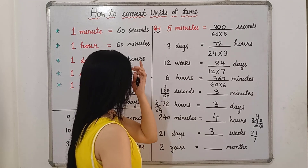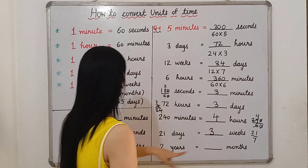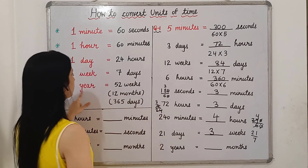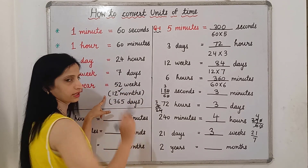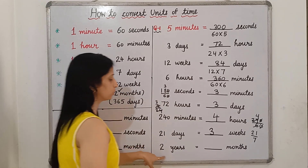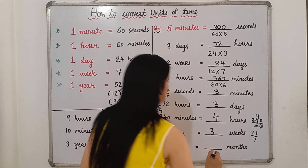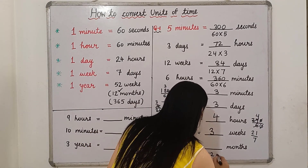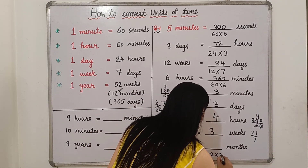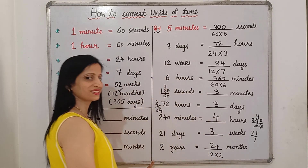2 years is equal to how many months? In 1 year there are 12 months, so in 2 years it will be 12 multiplied by 2, which means 24 months.